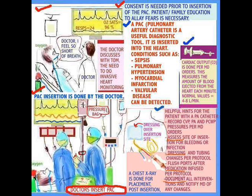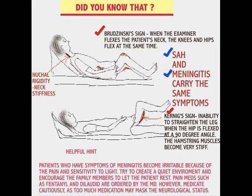Another topic I wanted to address — please excuse my voice — is two common signs found in patients who have brain injuries like subarachnoid hemorrhage and meningitis. They're called Brudzinski's sign and Kernig's sign. In Brudzinski's sign, when the examiner flexes the patient's neck, the knees and the hips flex at the same time. You have a lot of rigidity in these patients with meningitis and with subarachnoid hemorrhages.